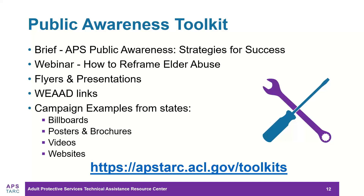Given the increase in public awareness efforts, the APS TARC developed a public awareness toolkit for programs this year. In the toolkit, you'll find a brief that addresses strategies for success, detailing benefits and risks of public awareness and tips for planning a campaign, including materials you might include. We have a webinar on reframing elder abuse, flyers and presentations from the Department of Justice Elder Justice Initiative, resources for World Elder Abuse Awareness Day, and examples of campaign materials from other programs throughout the country. Here's the link where you can get to it on our website, or you can just Google APS TARC and go to our toolkits page to find it.